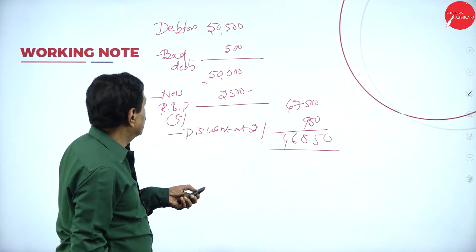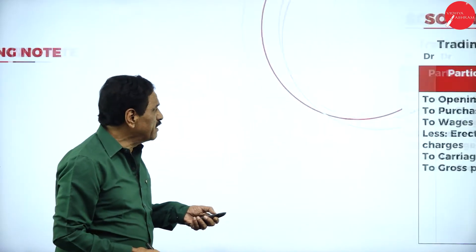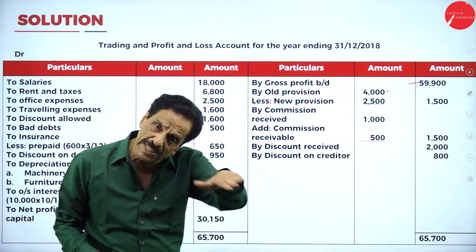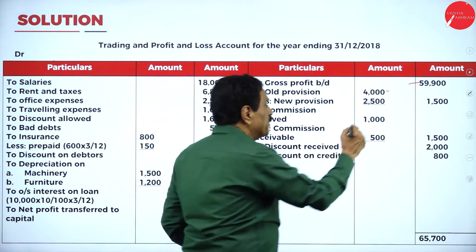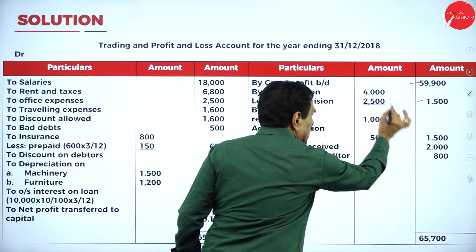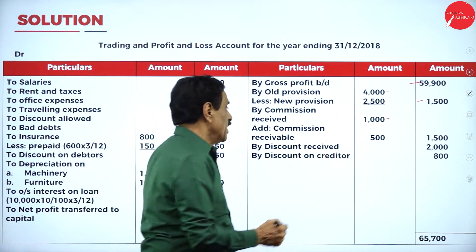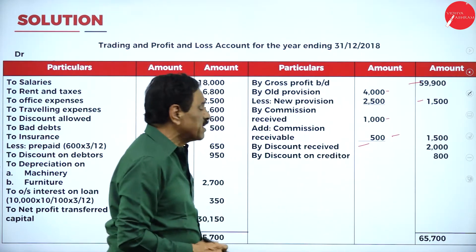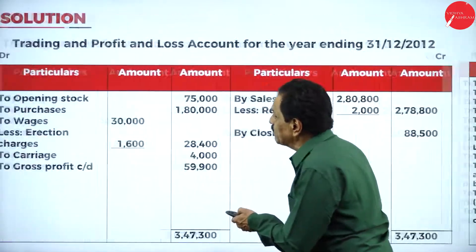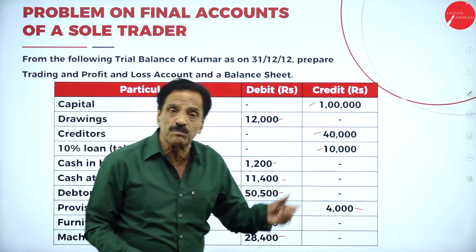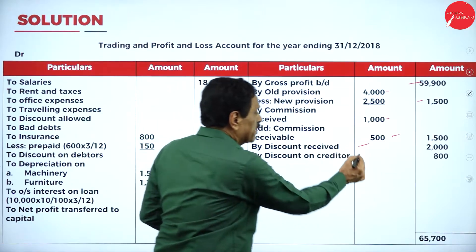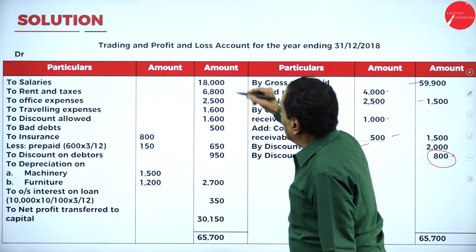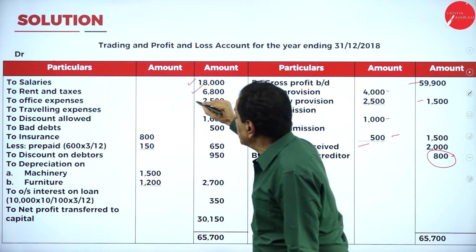Commission already received as per the trial balance is 1,000; commission receivable from adjustment is 500; total commission to be received is 1,500. Discount received as per the problem is 2,000. Creditors are 40,000; discount on creditors is 2%, which is 800 — this is a gain to us. Salary, rent and taxes, office expenses, and travelling expenses are all indirect expenditure on the debit side of the P&L account.